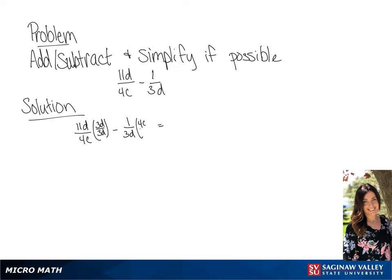the second fraction by 4c over 4c. And this is going to give us 33d squared over 12cd minus 4c over 12cd. Our final answer is going to be 33d squared minus 4c all over 12cd.